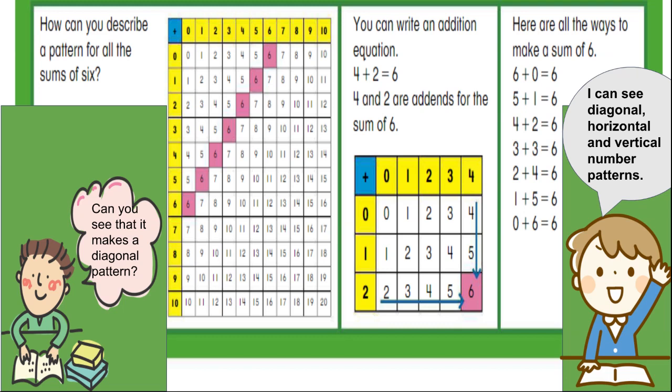1 plus 5 is 6. And if we're at 0, we just have to hop over 6 places. 1, 2, 3, 4, 5, 6. 0 plus 6 is 6.